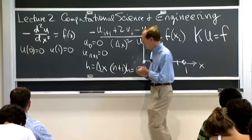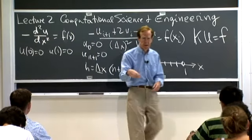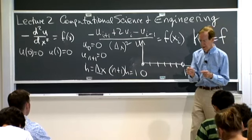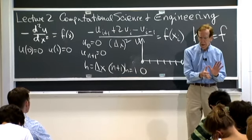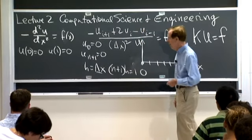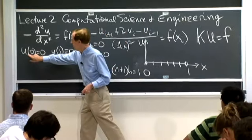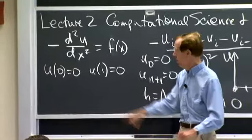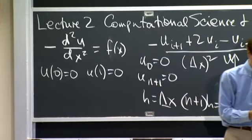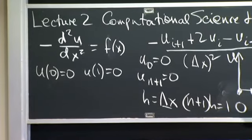A simple differential equation has a second derivative, and I put a minus sign for a reason you'll see. Second derivatives are essentially negative definite things, so that minus sign makes it positive definite. We have boundary conditions: at one end the solution is zero, at the other end it's zero — this is fixed-fixed. It's a boundary value problem, different from an initial value problem. We have x, space, not time.